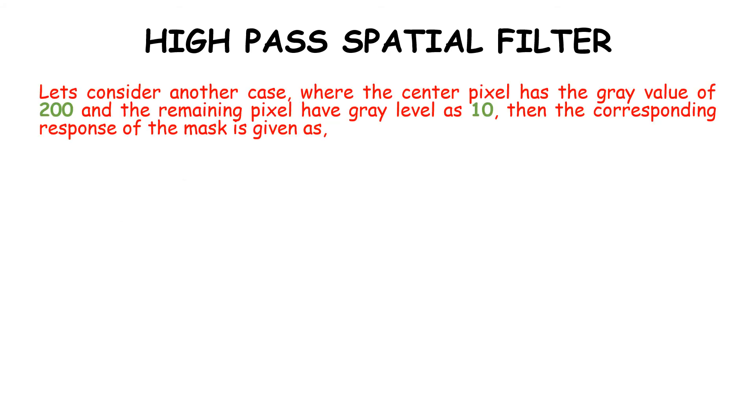Let's consider another case where the center pixel has a gray value of 200 and the remaining pixels have a gray level of 10. The corresponding response of the mask is given by r = (1/9)[...]. Here, -1, -1, and 8 are the values of the mask, and the corresponding gray levels are shown.